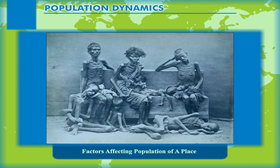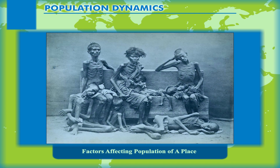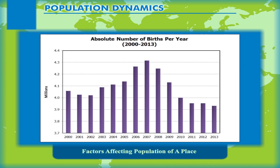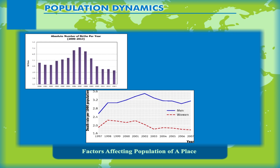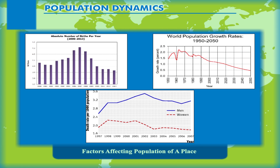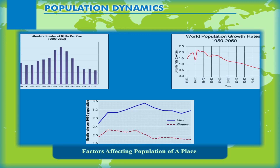However, due to diseases and other natural calamities, the number of people dying was also high. When the number of births per thousand people, called birth rate, is more than the number of deaths per thousand people, called death rate, there was an increase in population, called growth rate.